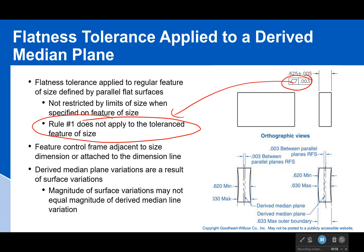When we control the derived median plane, we don't control surface line variations. When we control the derived median plane, we don't constrain those surface variations. They're going to be constrained by the virtual condition, but that's about it.